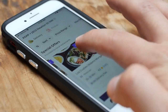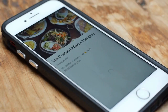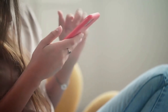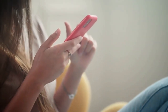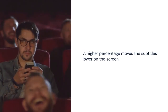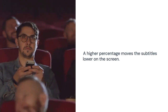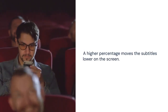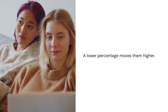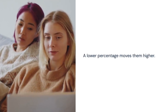Scroll down within the advanced settings and find the subtitle position option. You'll see a numerical value, usually a percentage. This value indicates the vertical position of the subtitles. The default is often 0%. A higher percentage moves the subtitles lower on the screen, and a lower percentage moves them higher.